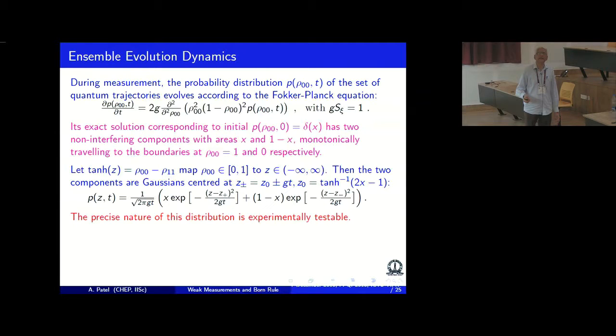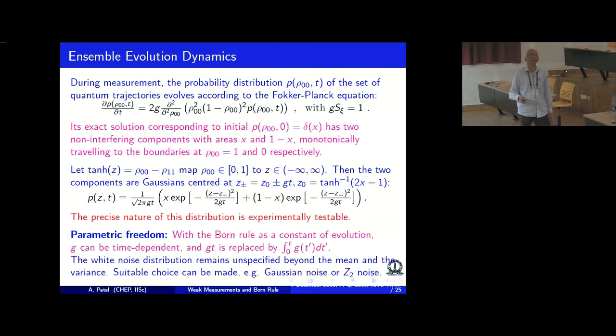And the point is to check whether this agrees with the experiment or not. The interesting point is this whole description has only one parameter, which is the strength of the coupling G between the system and the apparatus. Everything else is fixed. And if you want a little more generalization, the coupling can be time-dependent. Wherever is Gt becomes integral G times Gt. That is because the Bond rule is a constant of evolution and time can be just a parameter.